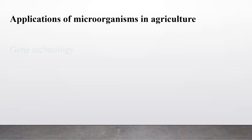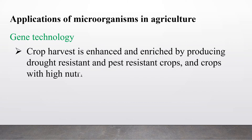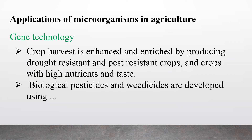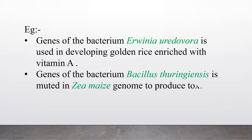Applications of microorganisms in agriculture. The first application is gene technology. Crop harvests are enhanced by producing drought-resistant and pest-resistant crops with high nutrients. Pest-resistant, drought-resistant and high-nutrient genes can be injected into crops. Biological pesticides and weedicides are also developed using microorganisms through gene technology. For example, genes of the bacterium Erwinia are used in developing golden rice enriched with vitamin A, and genes of Bacillus thuringiensis are inserted into crop genomes to produce toxins against crop pests.